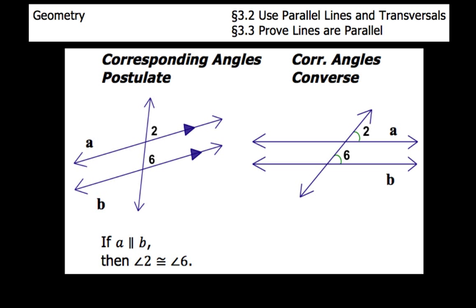For the corresponding angles converse — remember, converse switches the hypothesis and conclusion, from what we did in the last chapter with inverse, converse, contrapositive. So in this case, if angle 2 is congruent to angle 6, then line A is going to be parallel to line B. Note that 2 and 6 are not the only pair of corresponding angles — there are lots of other pairs. You could replace angle 2 and angle 6 with any other pair of corresponding angles, and they would be congruent.